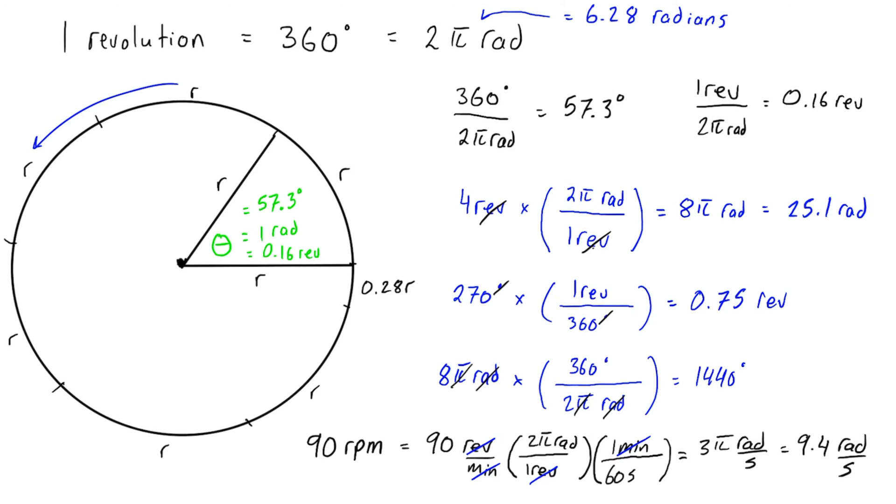You're often given units of rpm or something to start with, and you'll often be converting from rpm to radians per second. So that's how you do it. That's how you convert between revolutions, degrees, or radians, and that should be enough to get you going for the next video.